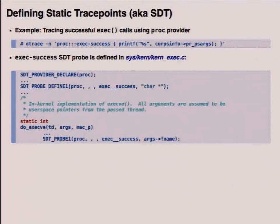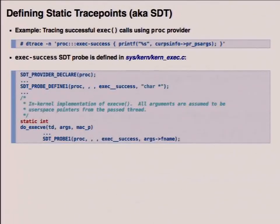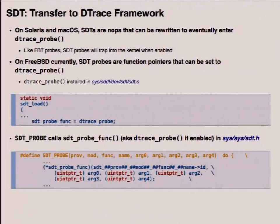SDTs are a little bit different. We saw the example of tracing successful exec calls using the proc provider. This is how you define a static trace point — generally useful if you want to add new trace points to the system. You first declare a provider; in this case, the proc provider. You need to declare the interface for the probe using SDT_PROBE_DEFINE1 (or versions through six), and the actual probe is placed in the code using SDT_PROBE1() — this is the actual probe point. There's more documentation in the headers.